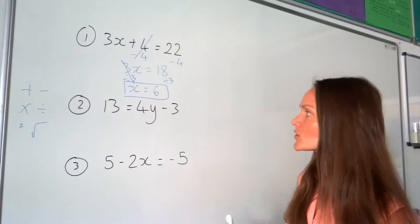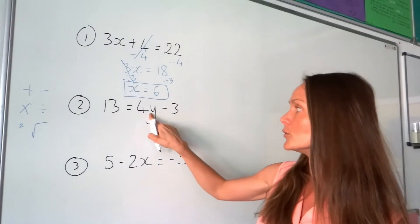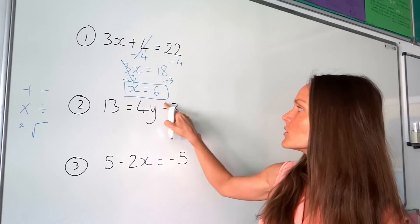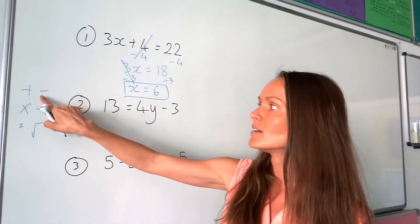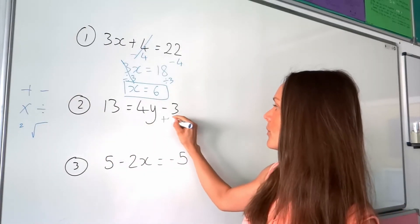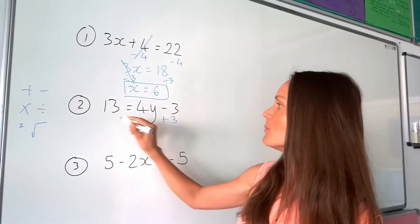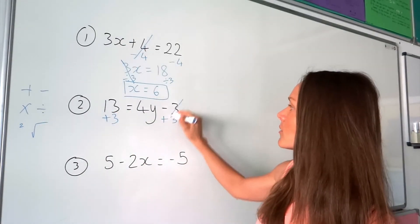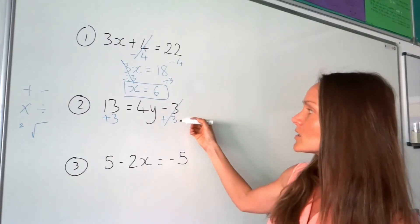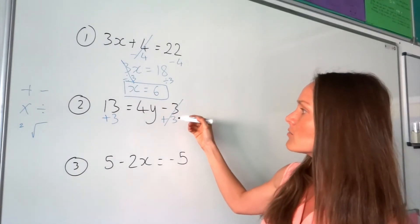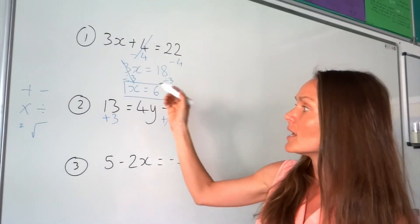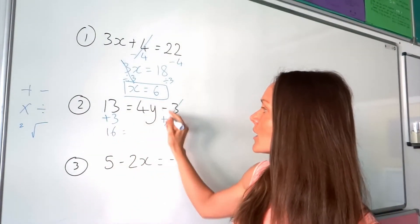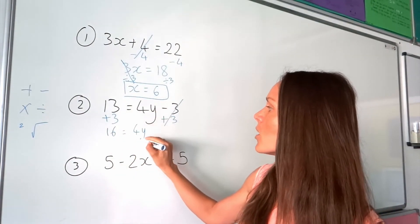On to number 2. Here's our unknown — we have to work out the value of y. So I need to get rid of the minus 3. The opposite of minus is plus, so I'm going to add 3. Remember to do the same on both sides. On the right-hand side, it cancels because that's where we're doing the opposite, going to 0. On the left-hand side, 13 plus 3 is 16, and I've still got my 4y.